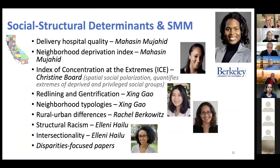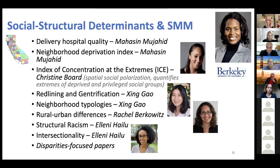This slide lists work in progress on social and structural determinants and SMM, really led by Mahasai Mujahid's team at Berkeley, with lead authors who were all trainees. It shows the variety of exposures we're looking at. Many of these are under review or nearly so. We tend to see results in the expected direction. These first authors will be ready to give more information in the near future.